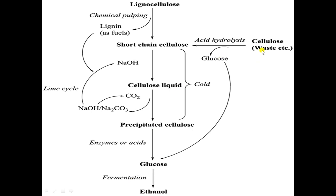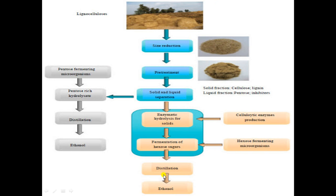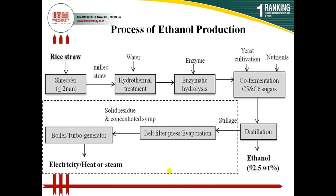This glucose may come from the conversion of cellulose to glucose. A small part of glucose is generated directly from cellulose, but mostly cellulose is first converted into shorter chain cellulose, then cellulose liquid, then precipitated, then acid-hydrolyzed to generate glucose. At last, this glucose undergoes fermentation: glucose is converted into methanol, then methanol is converted into ethanol. Ethanol is then separated through distillation.